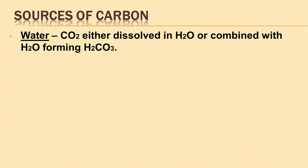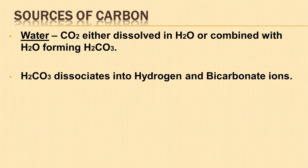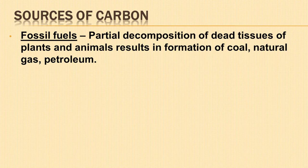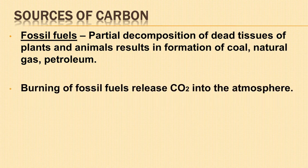Carbon dioxide is either dissolved in water or combined with water to form carbonic acid. The carbonic acid dissociates into hydrogen ions and bicarbonate ions. The aquatic plants make use of these bicarbonate ions for photosynthesis. When partial decomposition of dead tissues of plants occurs, it yields coal. Partial decomposition of marine organisms yields natural gas and petroleum. When coal, natural gas and petroleum are burned or used in industries, it produces carbon dioxide which is released into the atmosphere.